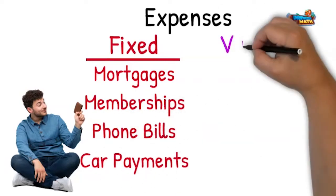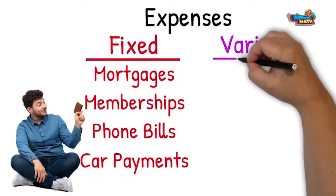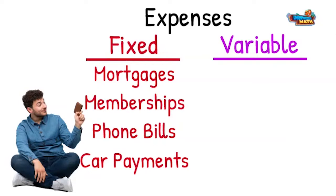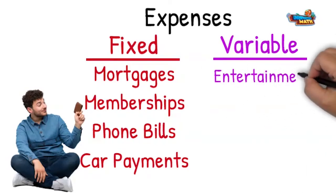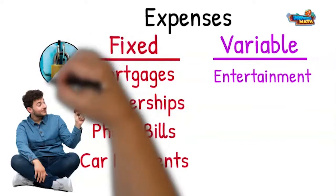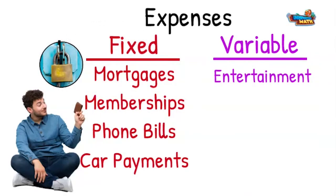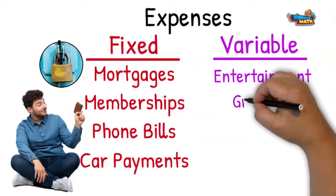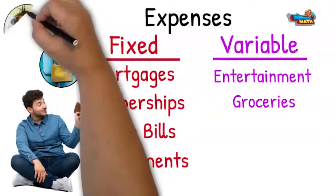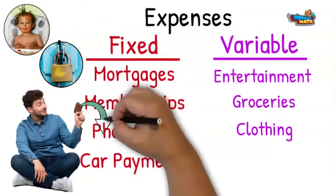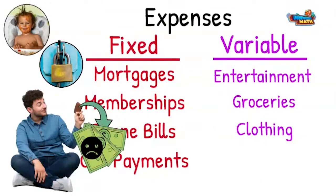Variable expenses are expenses that vary or change over time. Variable expenses could include entertainment, like going to escape rooms — I love escape rooms — groceries, I also love to eat, and clothing. Expenses are the money going out of your wallet.